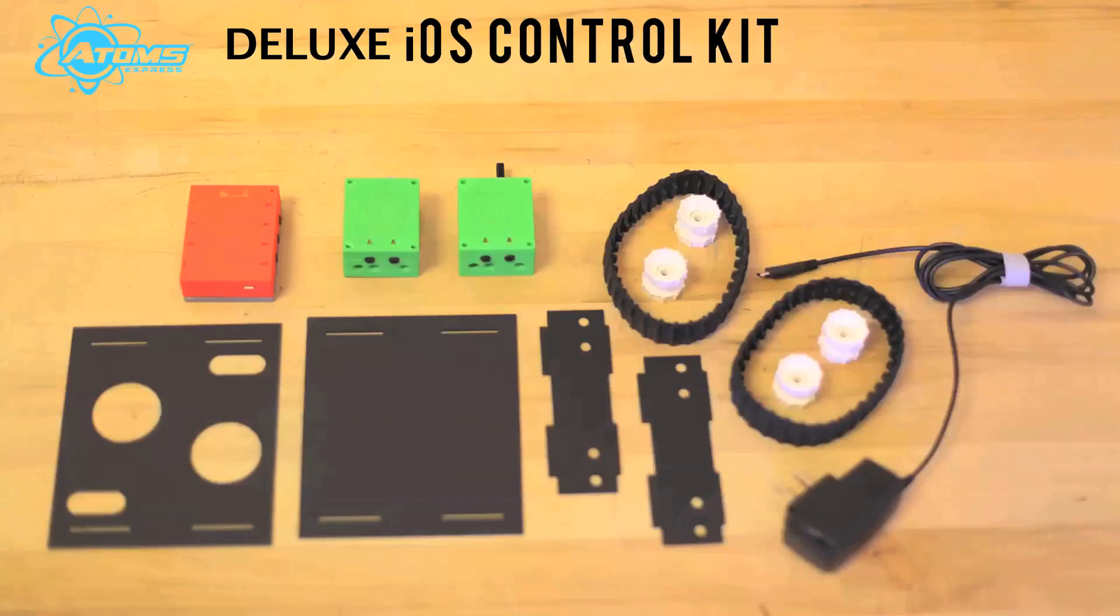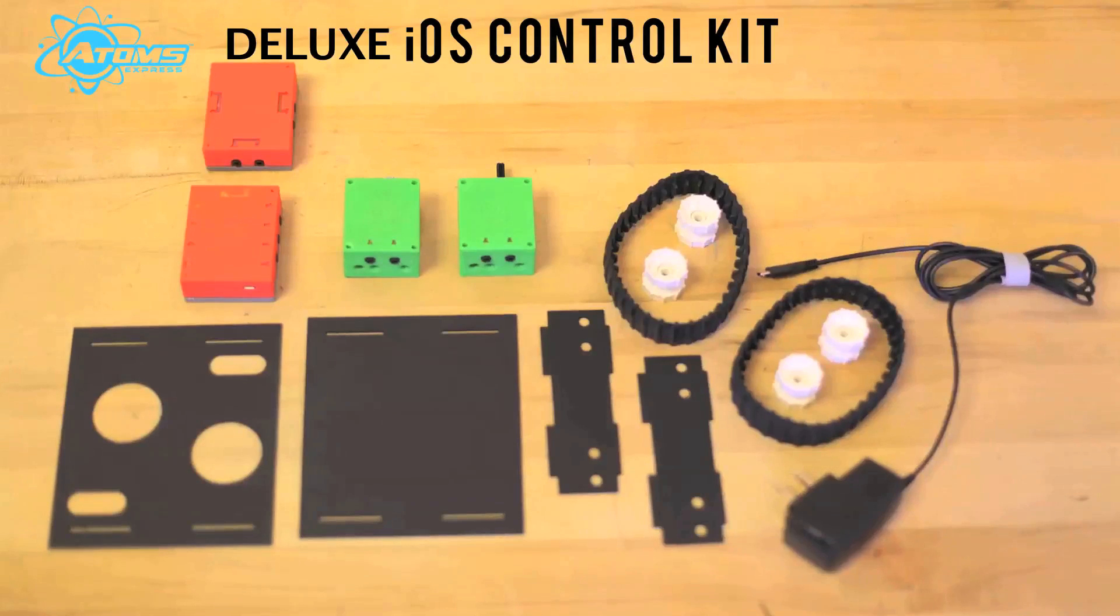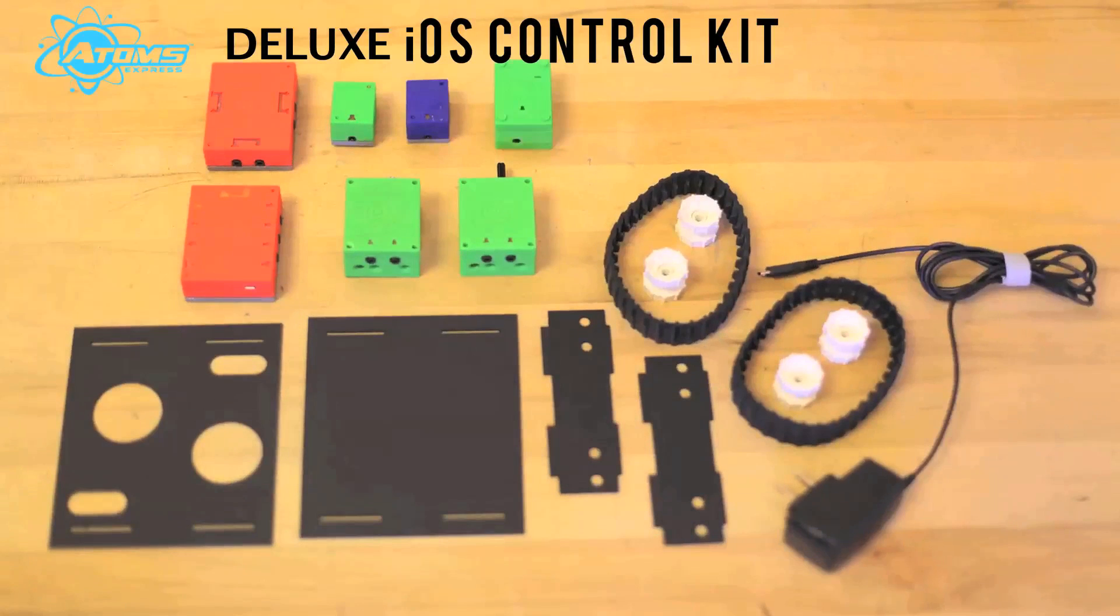The deluxe kit comes with all of that and adds a battery, an IR receiver, an IR transmitter, and an exploding brick.